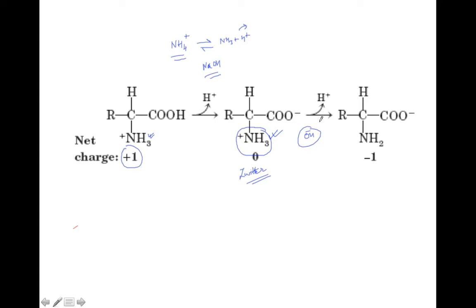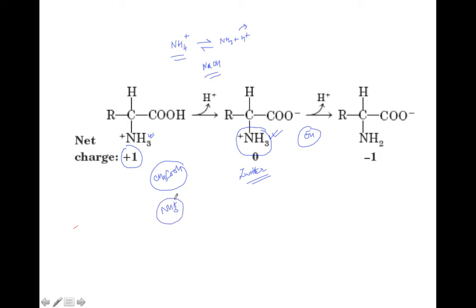So to summarize the rough idea: there are two groups — one behaving like acetic acid (the carboxyl group) and the other behaving like the ammonium ion (NH₃⁺). There are three ionic forms which can exist.